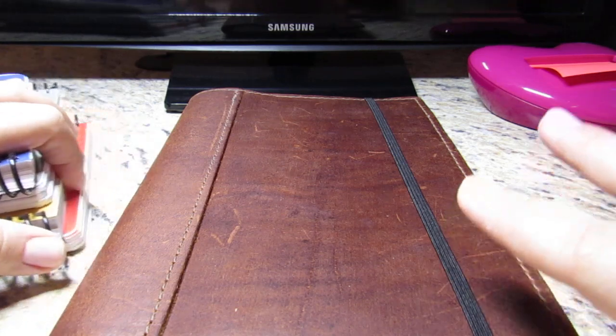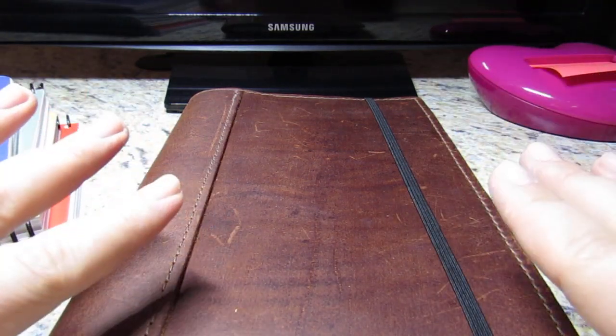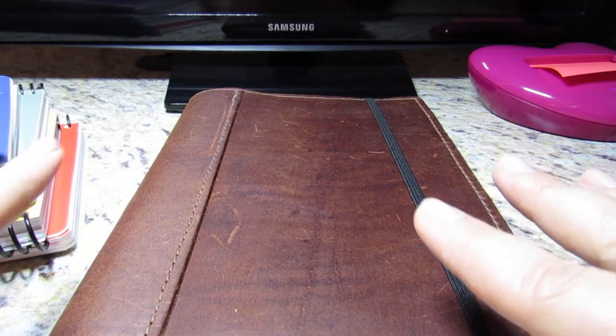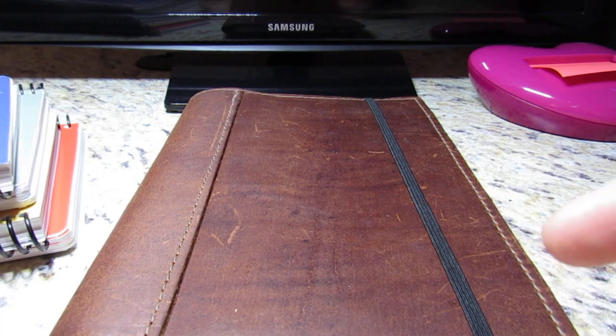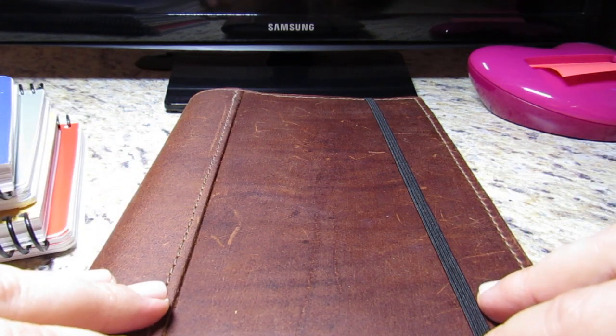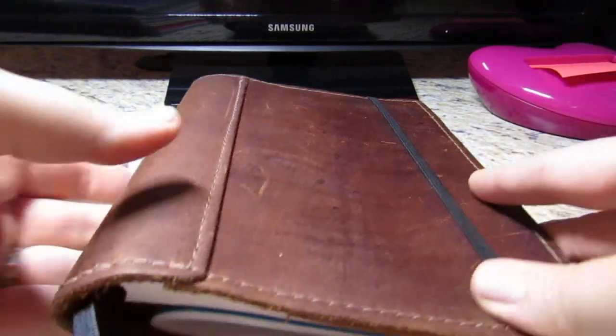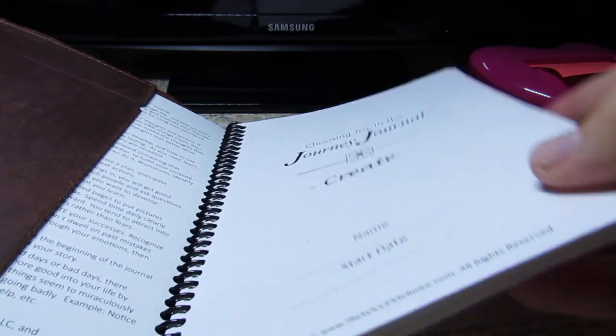And so I purchased the journal that kind of goes with the 2020 planner. It's sort of a companion. I guess the topics match up with the monthly topics in the planner, which you'll see in a minute. And so I decided I was kind of going back and forth, like, how do I want to use this?